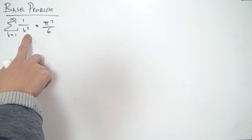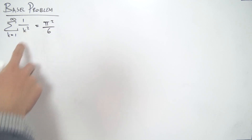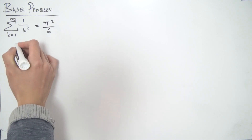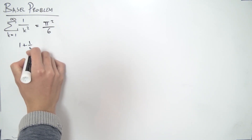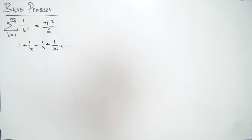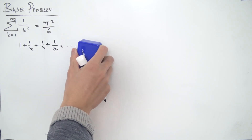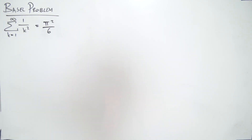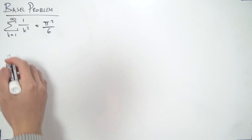The Basel problem is the sum of the reciprocals of all the squares over the natural numbers, going from k equals 1 all the way up to infinity. So this is equal to 1 plus a quarter plus a ninth plus a sixteenth and it keeps going like that. We want to show this infinite sum equals π²/6. There are many ways to do this — Fourier series, Euler's method using infinite products for sine — but the method I want to use today is complex analysis.